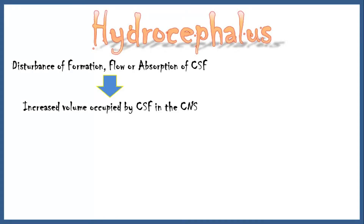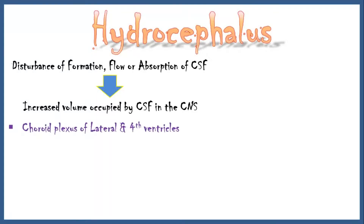Cerebrospinal fluid is mainly produced by the choroid plexus of the lateral and fourth ventricle. Normal CSF production is about 0.2 to 0.35 milliliters per minute. Normal circulating volume of CSF is 120 milliliters.